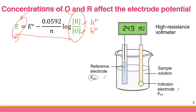The reference electrode has a potential of E_ref, and the indicator electrode has a potential of E_in. The reference electrode is the electrode which maintains a constant potential under all the same experimental conditions. In contrast, the indicator electrode potential E_in will change according to the composition of the sample solution.